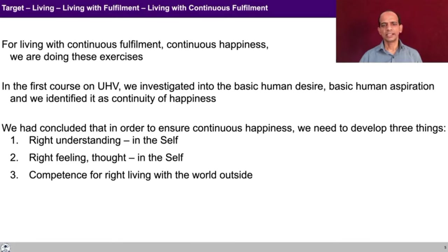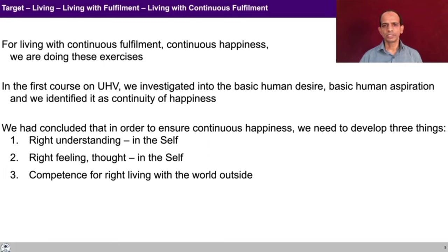Essentially, when we say relationship, there are two parts: one part is the right feeling and right thought in the self, and the second part is the expression. Expression comes naturally when you have the right feeling and right thought. Right understanding has to be ensured in the self, right feeling and right thought also in the self, and then going for competence or right living with the world outside — we learn expression in relationships, how to fulfill physical facility needs, and how to understand harmony in nature so that our production and managerial processes ensure sustenance of living with continuous fulfillment.